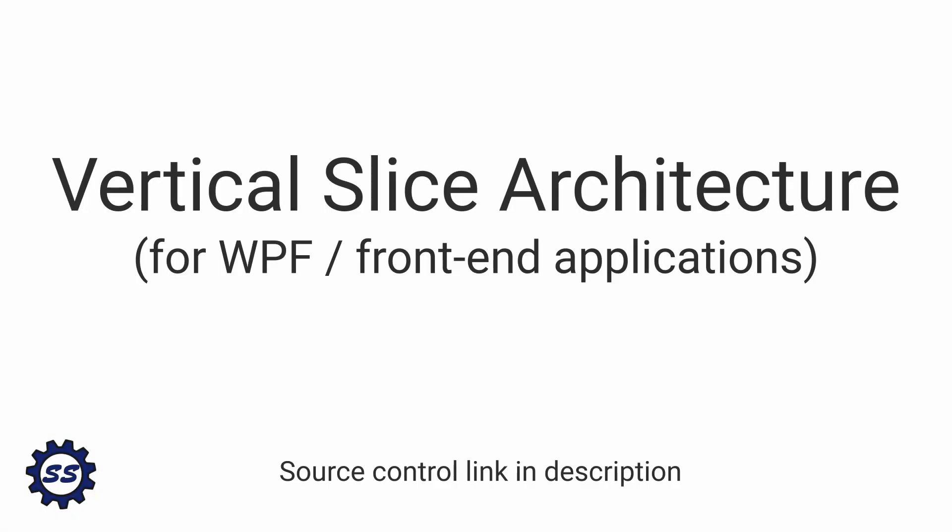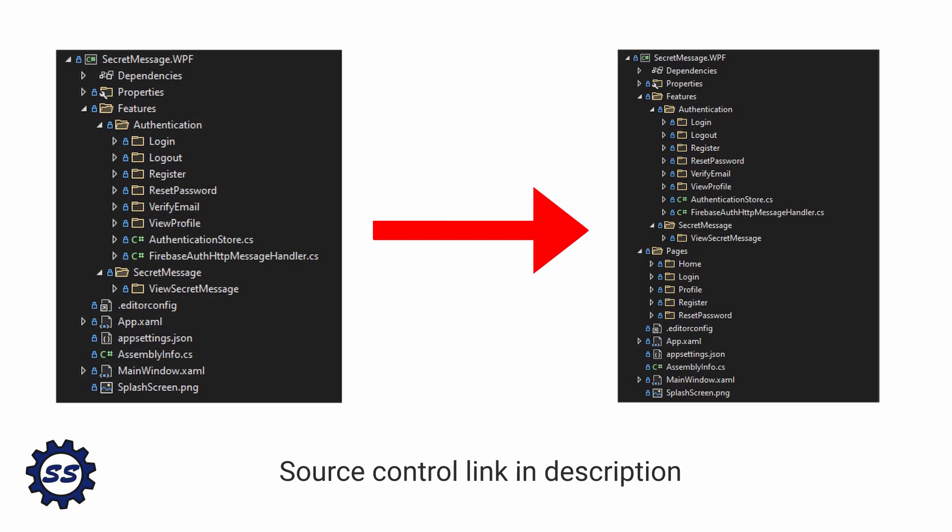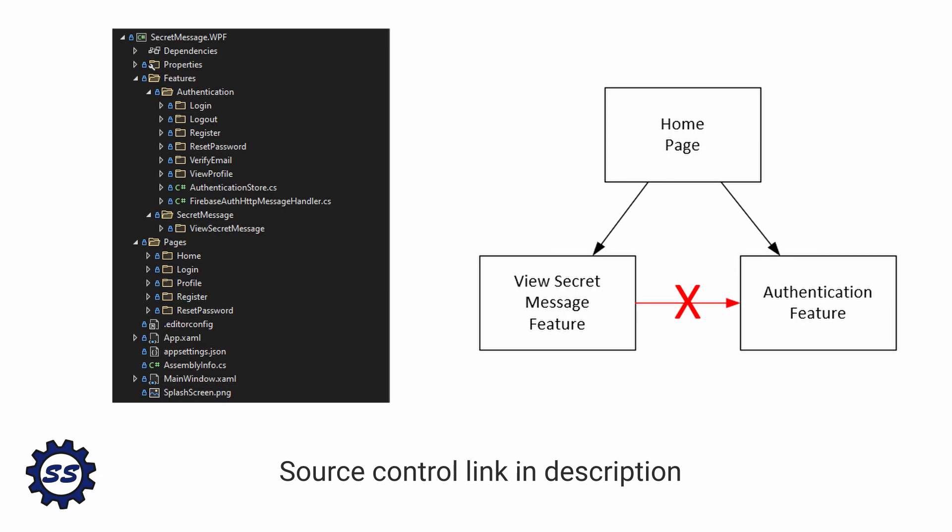Last time we continued improving the vertical slice architecture in our WPF application by extracting a pages layer that sits above our features layer. The goal of the pages layer is to compose multiple features together and ultimately break feature-to-feature dependencies, because I want features to be self-contained and not have to depend on other features.